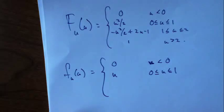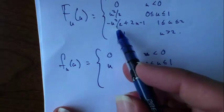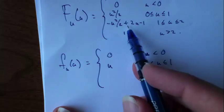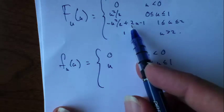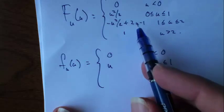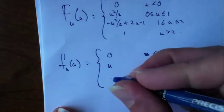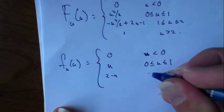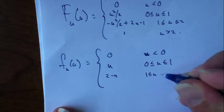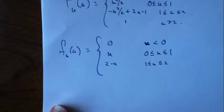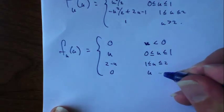What if you differentiate this stuff? You get negative u plus 2, or 2 minus u for u between 1 and 2. And then it's 0 for u greater than 2.